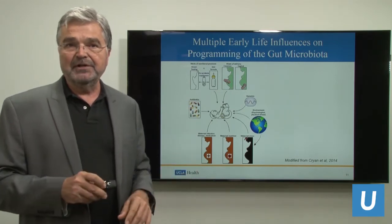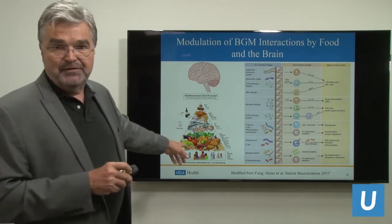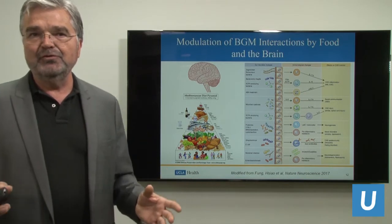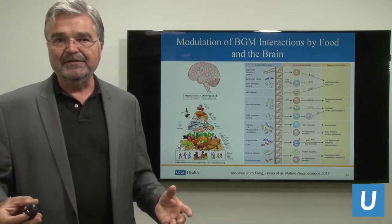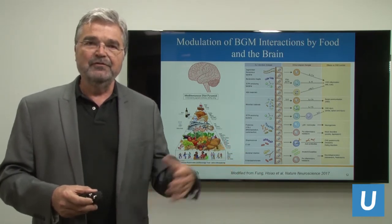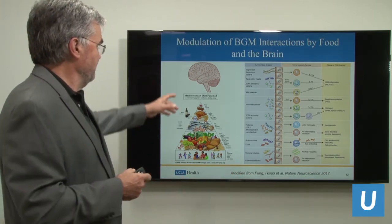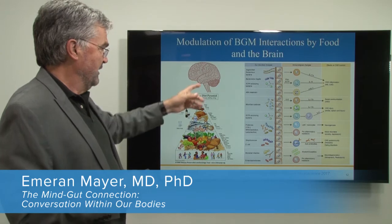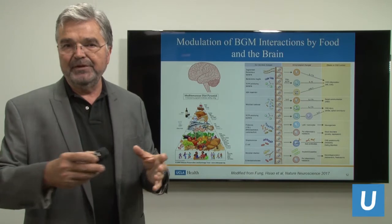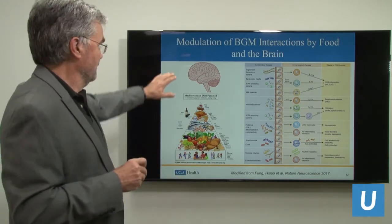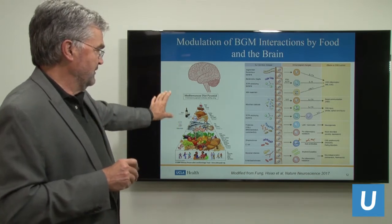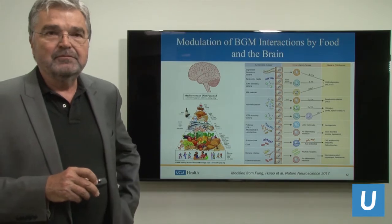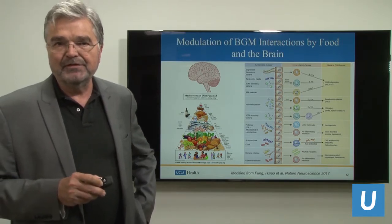So all these factors play a role in programming this neural network. Once it's programmed, what happens during our adult life? The two main factors that play a role are diet — a schematic of the Mediterranean diet, which is sort of the ultimate diet for our gut microbes because it's about two-thirds plant-based food, very little animal fat, a lot of polyphenols and antioxidants which also feed the microbes — and the central nervous system, which through top-down influences can modulate the gut microbiome throughout life. Stress, negative emotions, and diet are two major factors that play a role in the etiology and pathophysiology of many disorders that until recently have been considered just brain disorders without thinking about the microbial input.